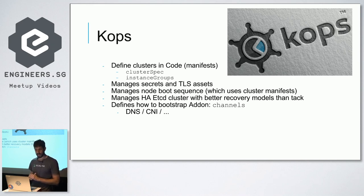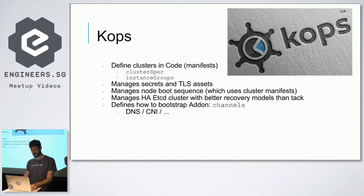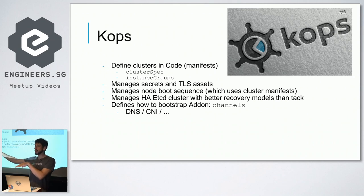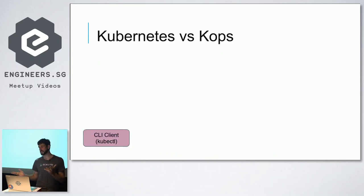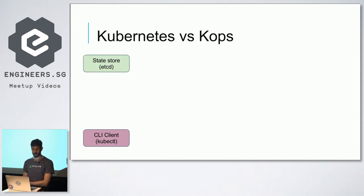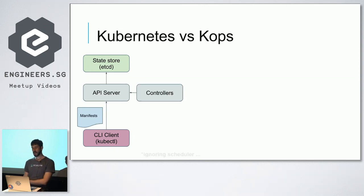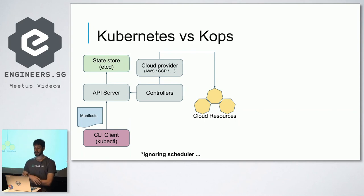We also played a lot with add-on channels, which I hope to demo. Kubernetes is a base system and you have add-ons such as a dashboard or DNS. Channels is a tool to manage those. This exemplifies why they say 'manage clusters the Kubernetes way.' On the Kubernetes side, we have the client, etcd as state storage, an API server, and controllers that watch for manifests and talk to the cloud provider to create cloud resources like load balancers.